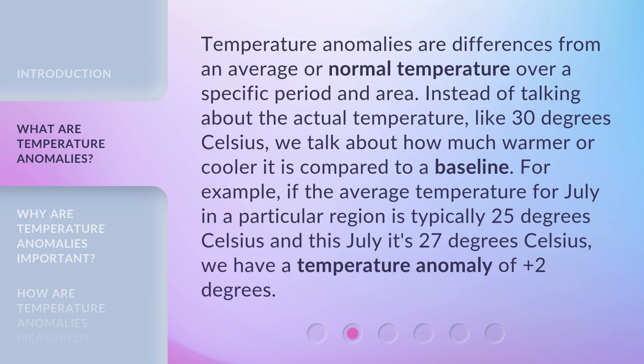Temperature anomalies are differences from an average or normal temperature over a specific period and area. Instead of talking about the actual temperature, like 30 degrees Celsius, we talk about how much warmer or cooler it is compared to a baseline. For example, if the average temperature for July in a particular region is typically 25 degrees Celsius and this July it's 27 degrees Celsius, we have a temperature anomaly of plus 2 degrees.